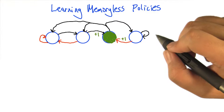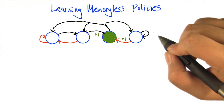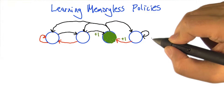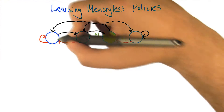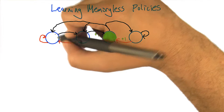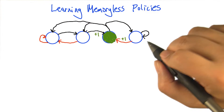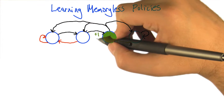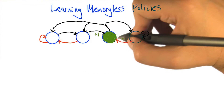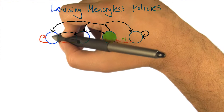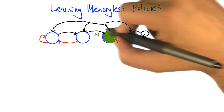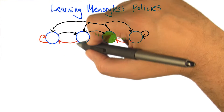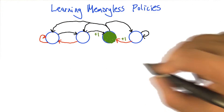Here's a little POMDP. This is a POMDP that has four underlying states, two observations — there's this clear blue thing and there's the green thing — and two actions, black and red. Black takes you to the right, and red takes you to the left, back around the other way.